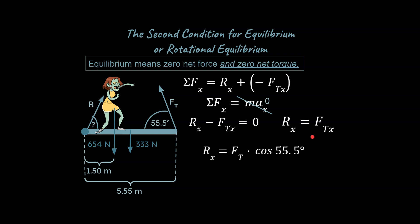Then we can go back and say, well, we know what FT in the X is. We can relate that to FT times the cosine of 55.5. And so now we can solve for R in the X. So this is the answer for that. So we're one step closer to solving for our problem.